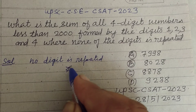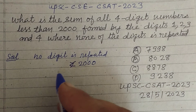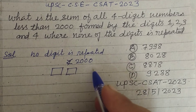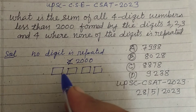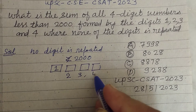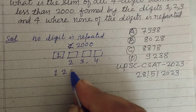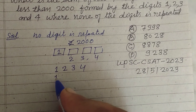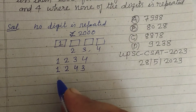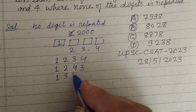Since the number must be less than 2000, we always place 1 at the thousands place. The remaining digits are 2, 3, and 4. So the numbers formed are: 1234, 1243, 1324, 1342, 1423, and 1432.